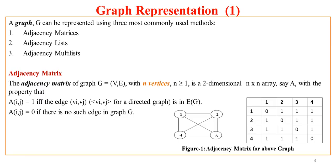A graph G can be represented in various ways. The three most common ways are adjacency matrix, adjacency list, and adjacency multilist. We will start with the adjacency matrix. The adjacency matrix of a graph G, which is a set of V and E having n vertices where n is greater than or equal to 1, is a two-dimensional representation.